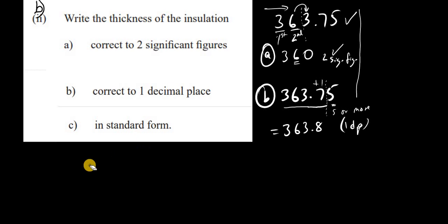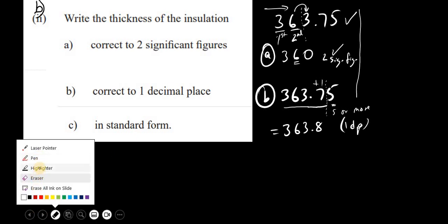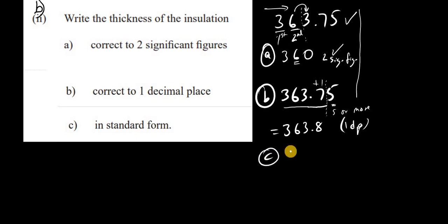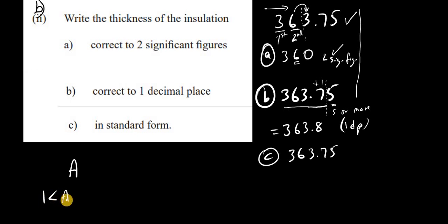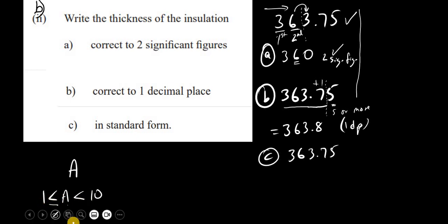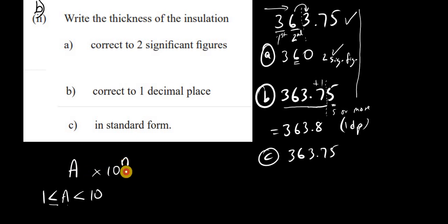For part C, we write 363.75 in standard form. In standard form, the number A must satisfy 1 ≤ A < 10, multiplied by 10 to the nth power, where n is an integer. This is also called scientific notation.